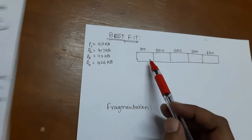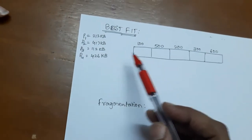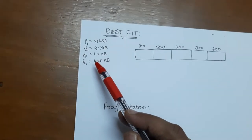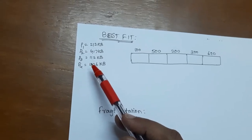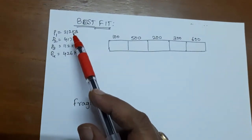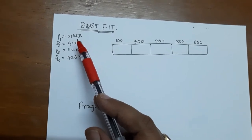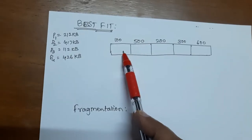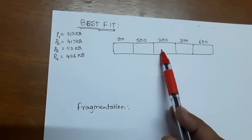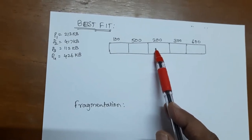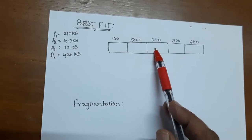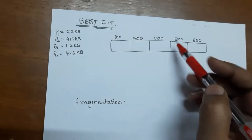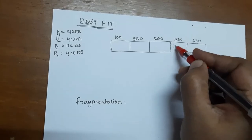Best fit — the same memory blocks and incoming processes are considered. The best fit says: allocate the smallest hole that is just big enough to hold that particular process. The incoming process P1 is 200 KB, which is greater than the first partition. The next partition of size 200 KB also cannot fit the process. It goes to the next partition of 300 KB, which can just fit the process.